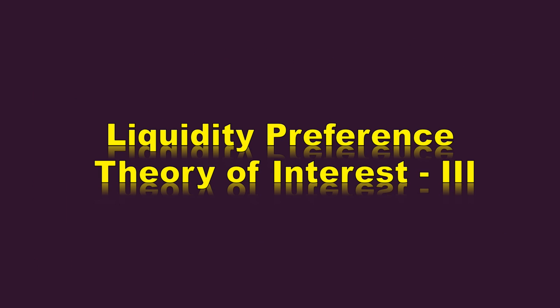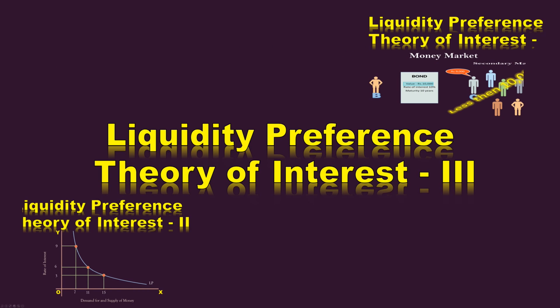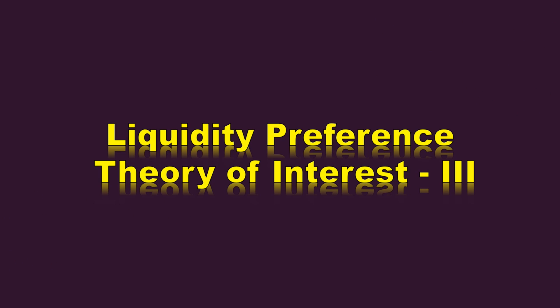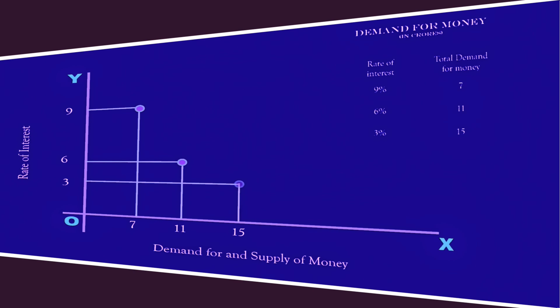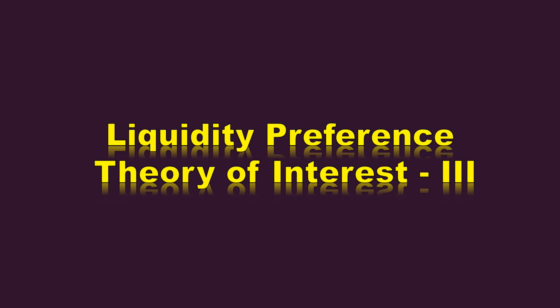This is part 3 of the liquidity preference theory of interest series. For the benefit of those who didn't view the first two parts, links are given in the description. The lesson is that the demand for and supply of money determines the rate of interest. We have already learned the derivation of the demand curve for money; now it is time to fix the supply curve of money.